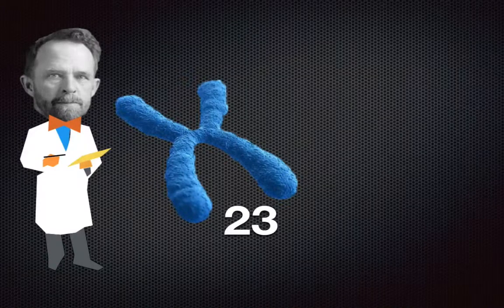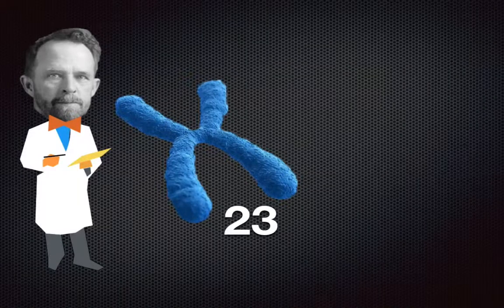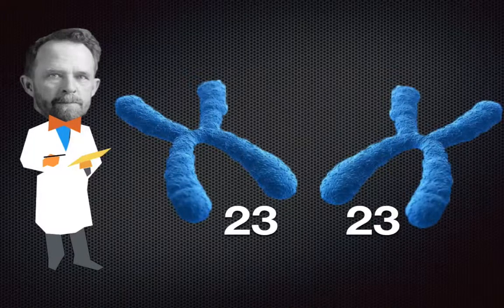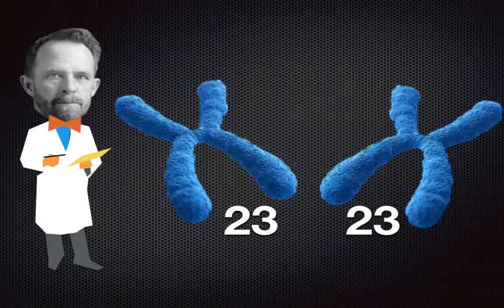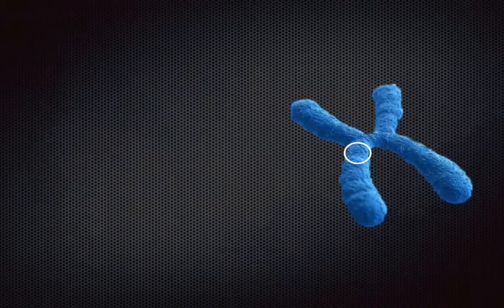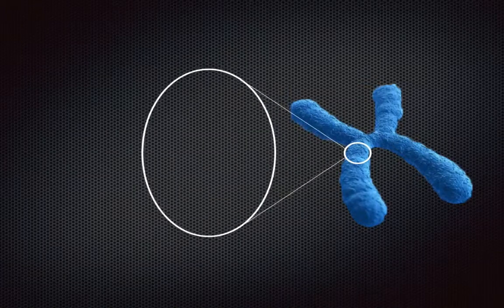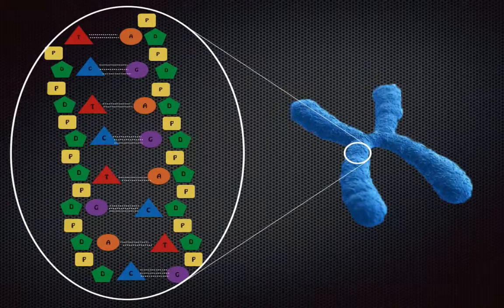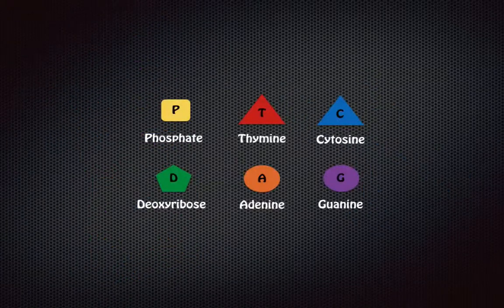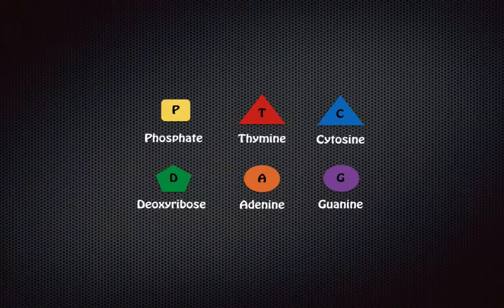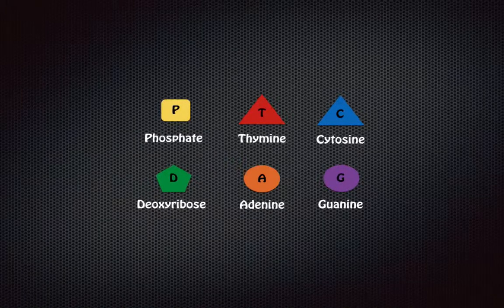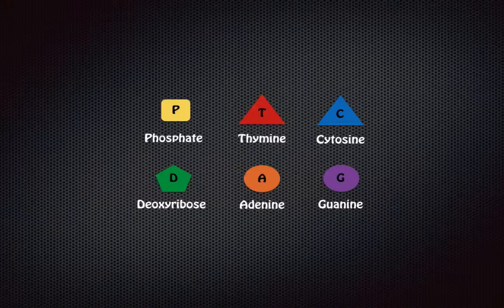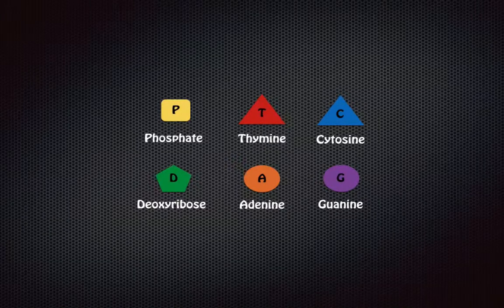He also noticed that the chromosomes from one cell to another were usually identical. Thomas Morgan took a closer look at these chromosomes to see what was in them. He identified six components that the DNA was made out of: phosphate, thymine, cytosine, deoxyribose, adenine, and guanine.